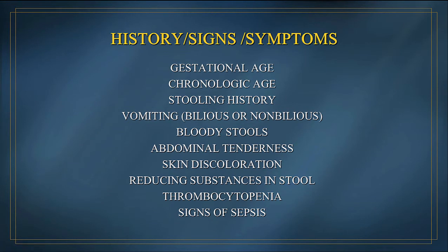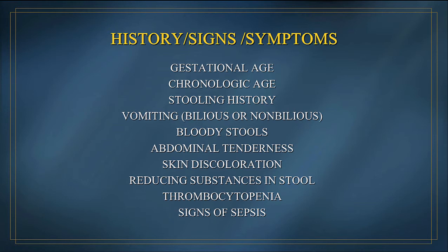If you have a patient with asymmetric bowel distension, you really need to take into consideration the various signs, symptoms, and history. Two of the most important things are the gestational age and the chronologic age. Necrotizing enterocolitis is much more common in the premature infant. Chronologic age is almost as important — if a baby develops diffuse bowel distension with an asymmetric gas pattern early on, you're going to be more concerned about a distal intestinal obstruction, although NEC can present as early as the first day of life. The stooling history is important when worried about distal intestinal obstruction. Both bilious and non-bilious vomiting can occur in NEC or distal intestinal obstruction.